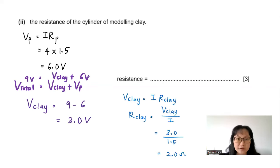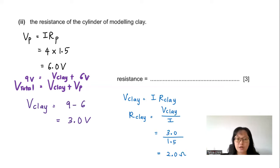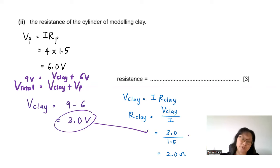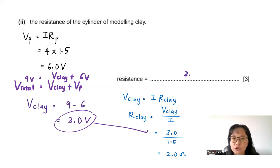Using Ohm's law to find the resistance of the clay: R = V/I = 3 ÷ 1.5 = 2 Ω.